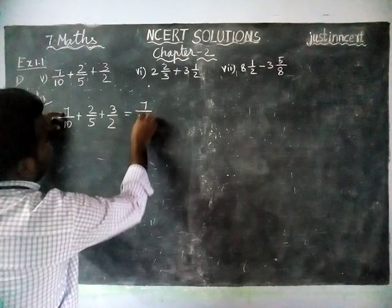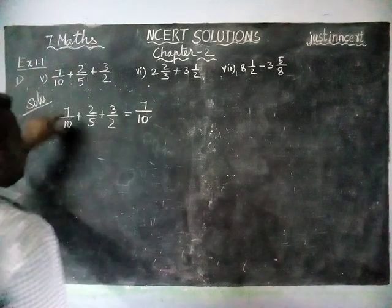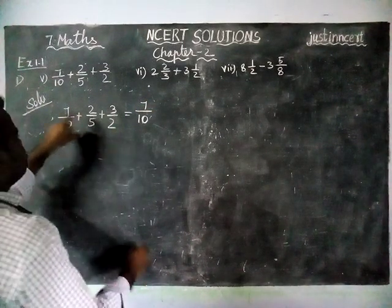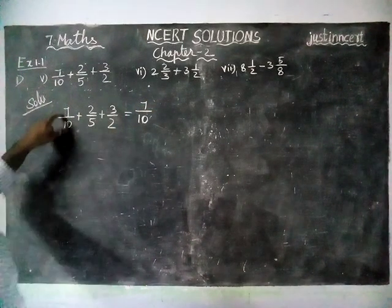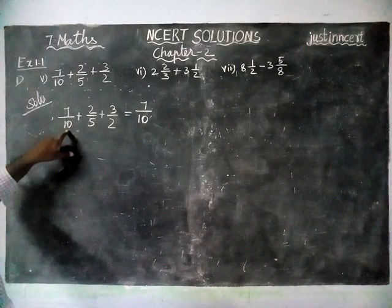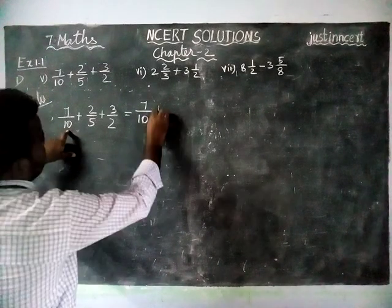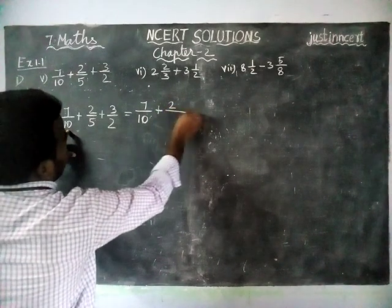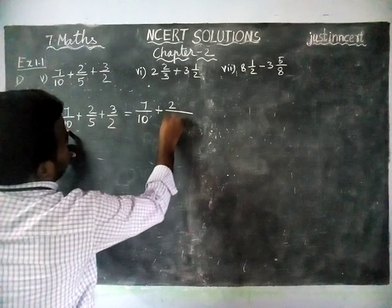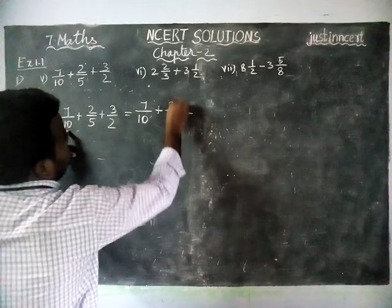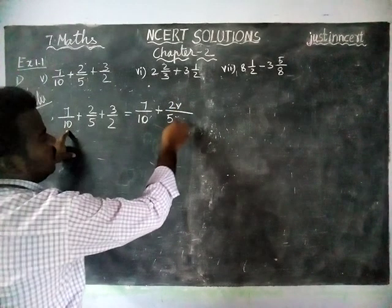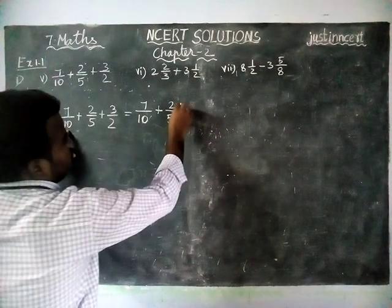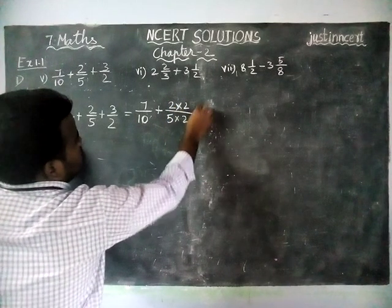7/10 — when we are taking LCM, everything should be 10. So now this is 7/10 — already 10 is there, no problem. Plus 2/5: if we multiply 5 with 2 we will get 10 as the denominator, so multiplying numerator 2 by 2.